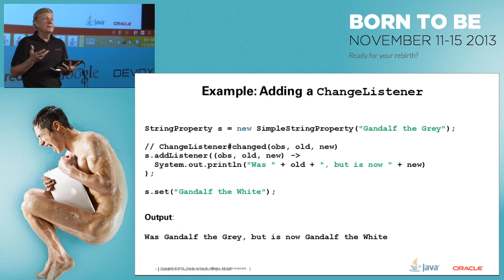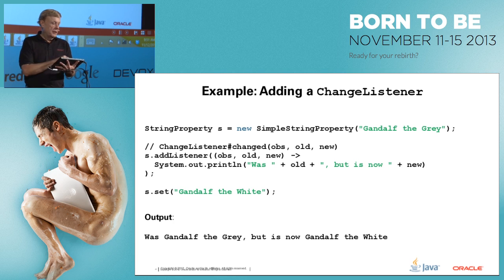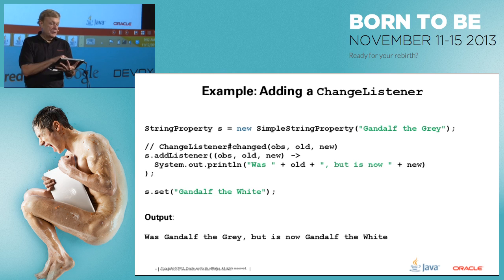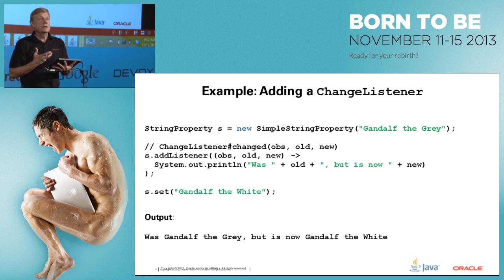By the same token, a ChangeListener is an interface with one abstract method taking three arguments: the observable value, the old value, and the new value. We add a listener to the same SimpleStringProperty. When we set it to 'Gandalf the White,' it prints that it was 'Gandalf the Gray' but is now 'Gandalf the White.' We pass the old and new values in and print both. We're adding to the listener the lambda that represents the ChangeListener.